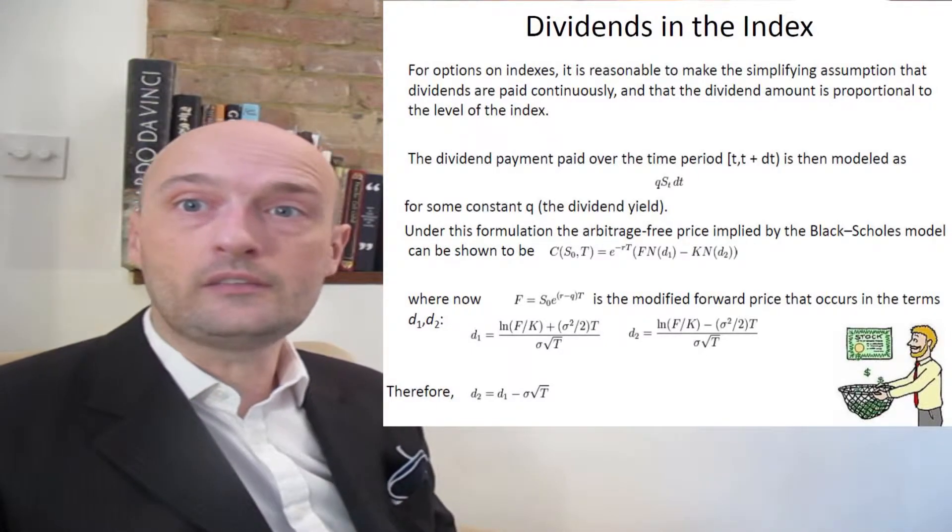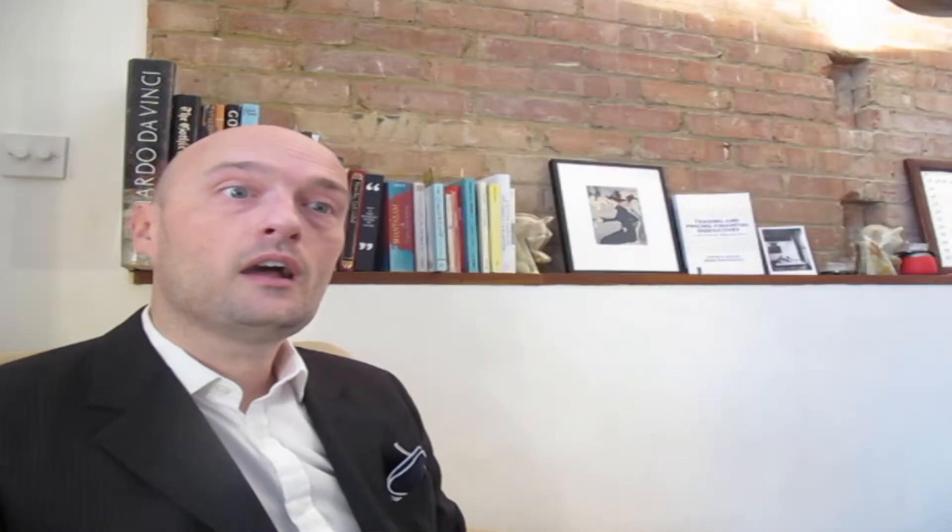The next thing up are foreign exchange options. A foreign exchange option is a derivative where the owner has the right, but not the obligation, to exchange money denominated in one currency into another currency at a pre-agreed upon exchange rate by a specified date. It's a standard option, but instead of buying stock, for example, we're exchanging money from one currency into another.